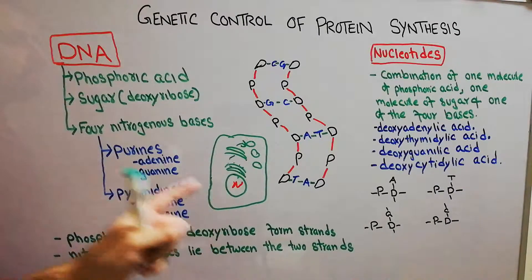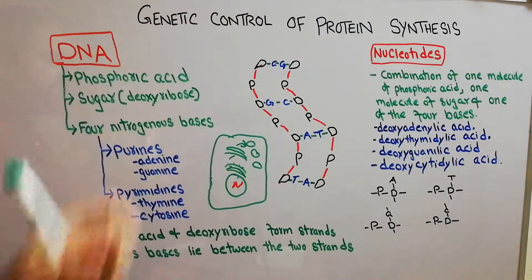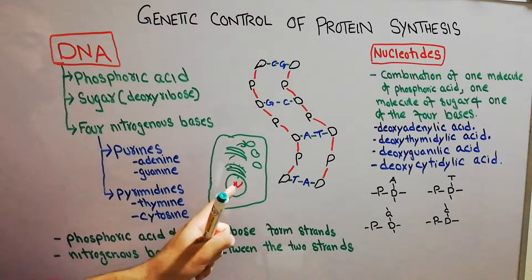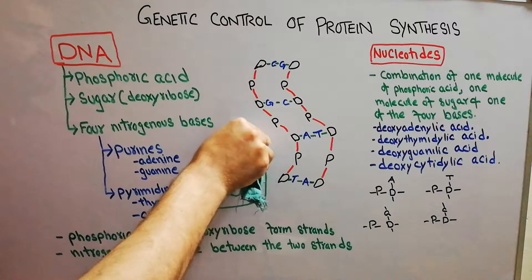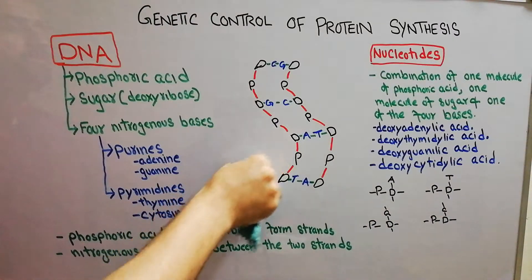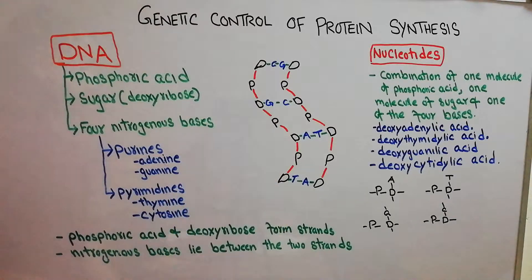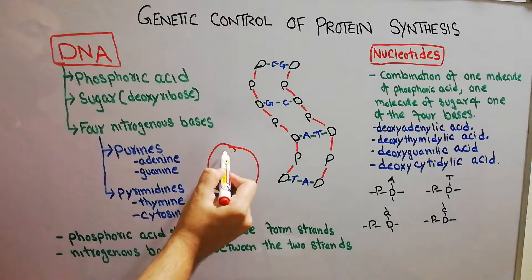But how exactly is the nucleus controlling the formation of proteins? How is the signal coming from the nucleus to the endoplasmic reticulum and how is it converted into proteins? We are going to start a new series of lectures on this topic. First, we need to know that inside the nucleus we have chromosomes.